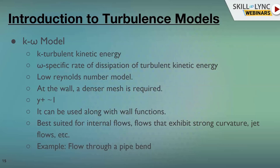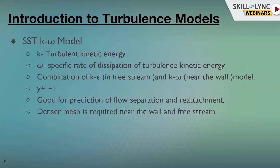This is another famous model: the SST k-omega model, or Shear Stress Transport k-omega model. It is actually a combination of the first two models we have seen — k-epsilon and k-omega — and here also we require y-plus close to one. One advantage with this model is it automatically switches between k-omega and k-epsilon. Near the wall where velocities are less, the model switches to k-omega, and away from the wall where turbulence increases, it switches to k-epsilon.